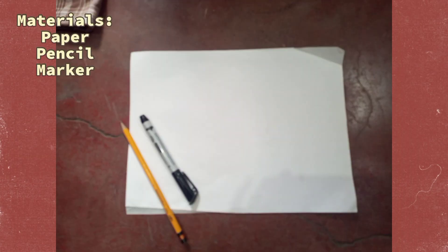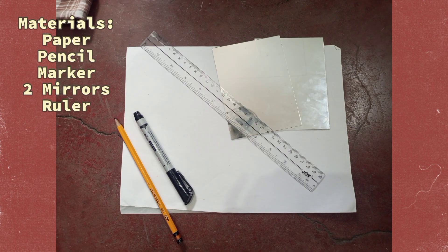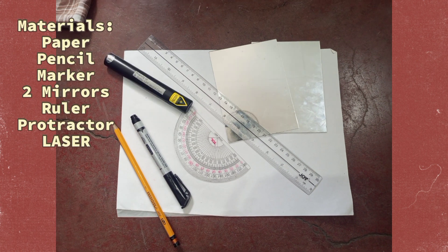You only need a paper, pencil, marker, two mirrors, ruler, protractor, and a laser.